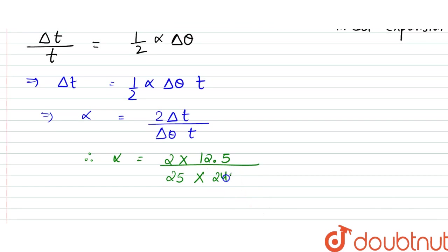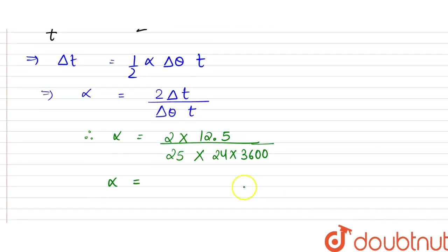That is 24 hours times 3600 seconds. So alpha equals, when we calculate the value, 1 divided by—2 times 12.5 divided by...